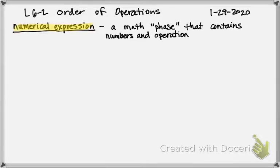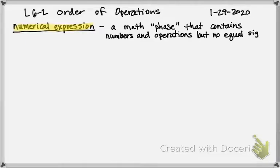Operations include adding, subtracting, multiplying, dividing, but no equal sign. You're not trying to solve for the box, for the mystery number. So let's talk about order of operations.